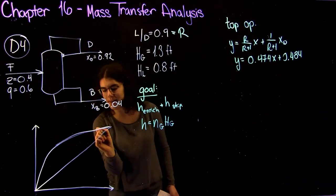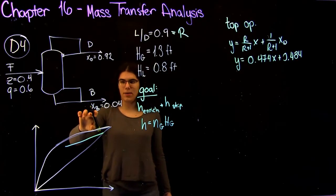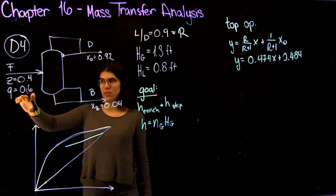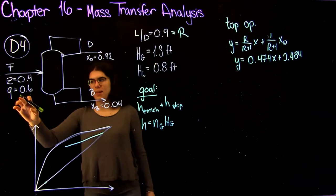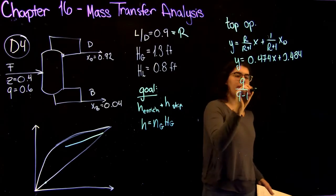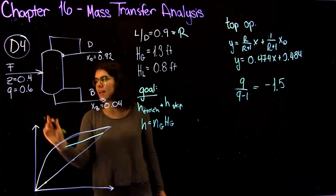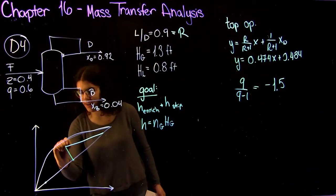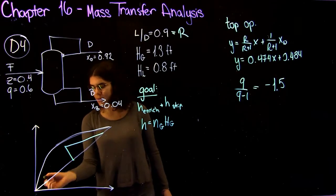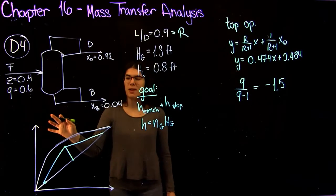Now we're able to plot our top operating line, it should look something a little bit like this. Our next step is using our feed line, we can also find our bottom operating line. We know that the bottom operating line will intersect at this point 0.04, 0.04. The slope of our feed line, we can find it using the Q. The slope of the Q line is Q over Q minus 1, which gives us a slope of minus 1.5. We also know that the Q line has to intersect at the point on the Y equals X line of 0.4, 0.4. We don't even have to find an equation for our bottom operating line since we have two points that we know it intersects. That you should be able to do pretty easily by now, it's based on your distillation chapter, so nothing new here.